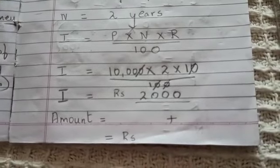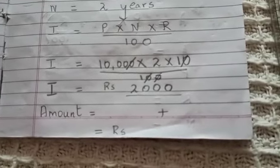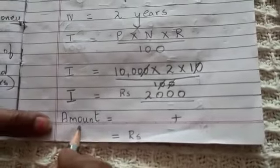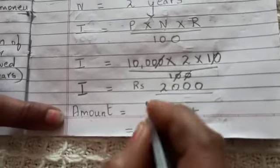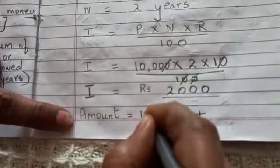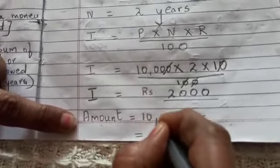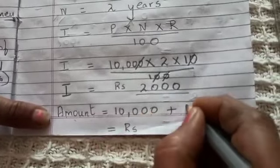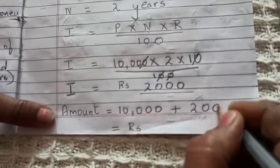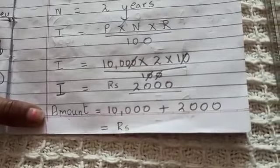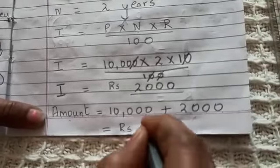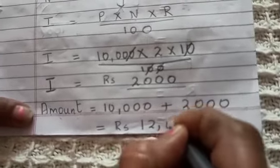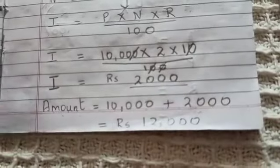Now what is the total amount that he has to pay the bank? The total amount that he has to pay the bank will be the money which he borrowed, that is 10,000, plus 2000, and that is equal to rupees 12,000.